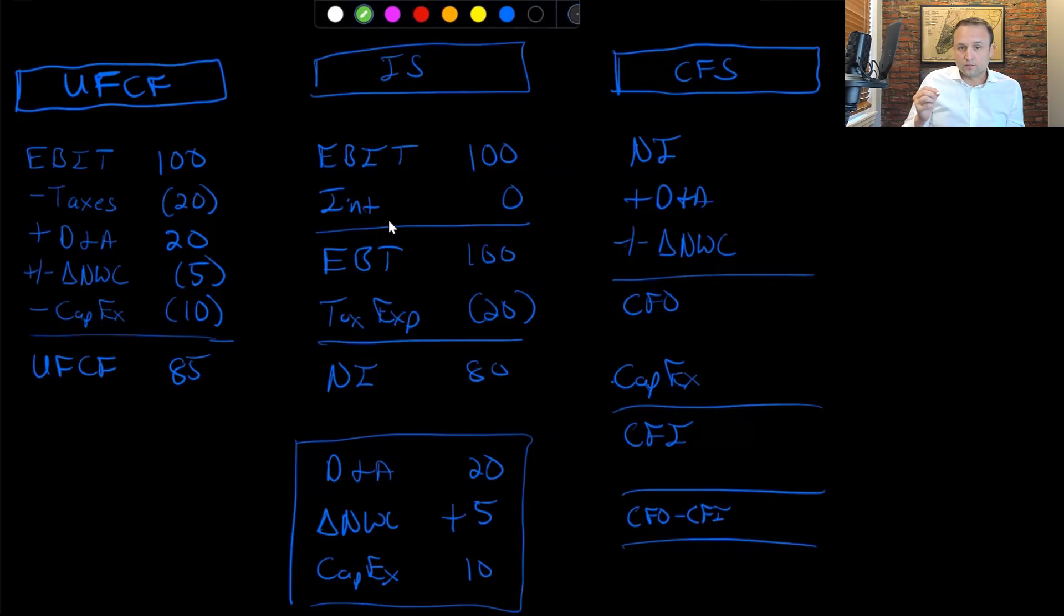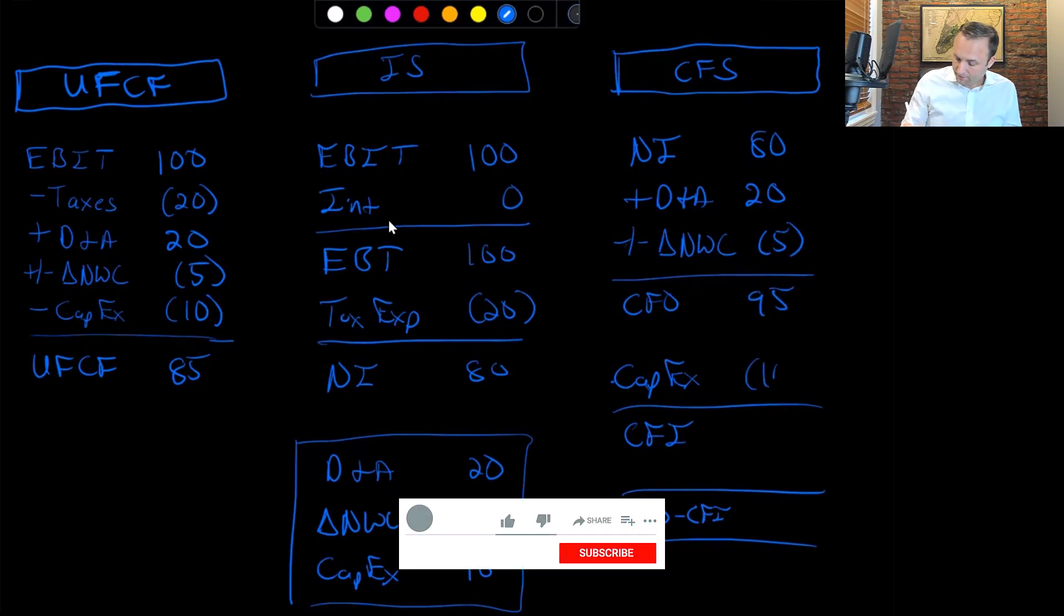The big difference with the cash flow statement approach is that we actually start with net income, which already incorporates some of the elements that we would otherwise have included in the other approach. With the cash flow driven approach, we're starting from the bottom of the P&L instead. So we're going to have our 80 of net income. We're then going to add back 20 of D&A. We have five out for our working capital. So it gets us to 95 of CFO and then 10 out for CapEx.